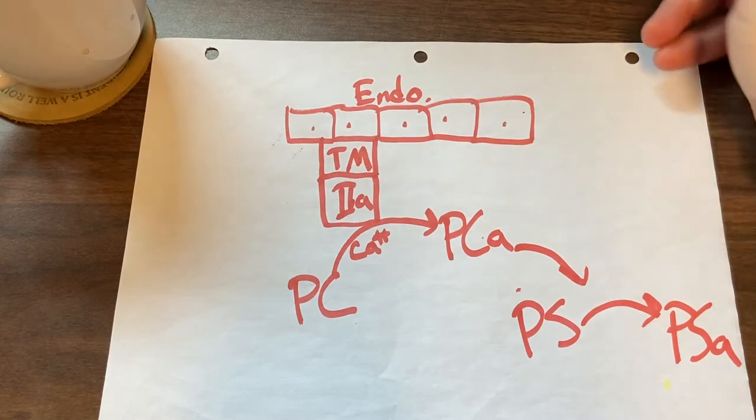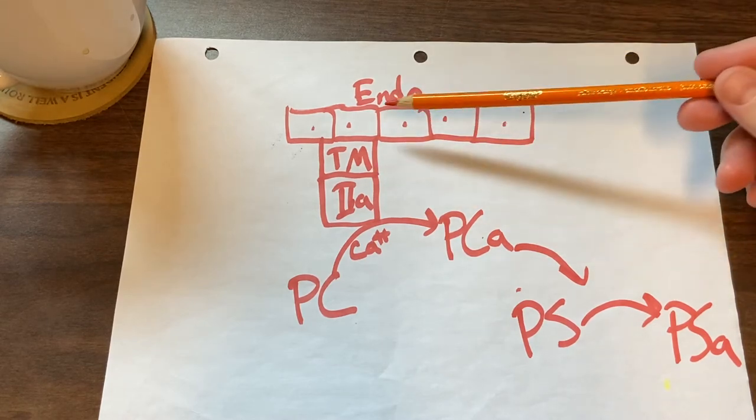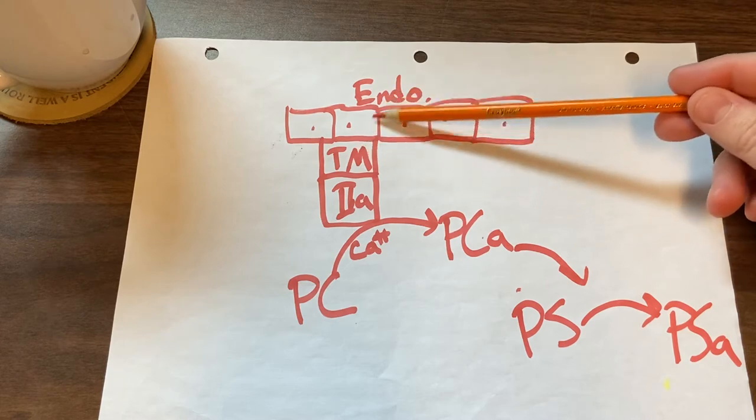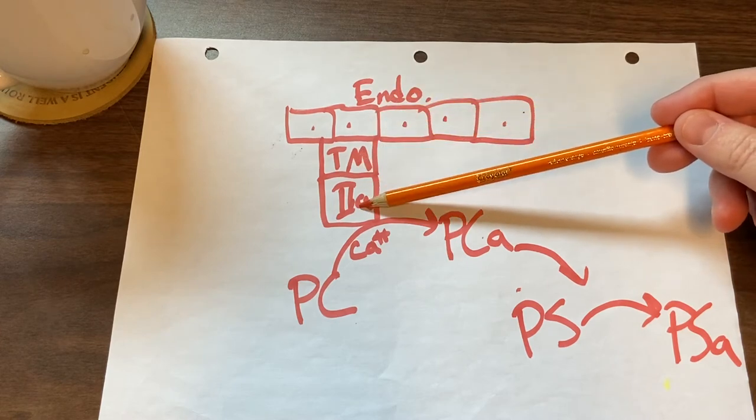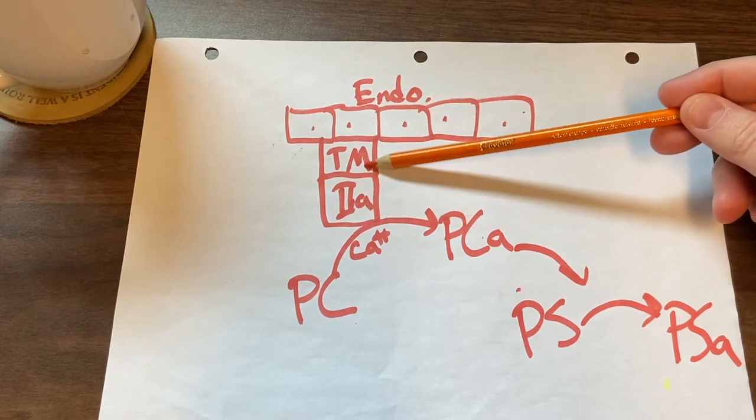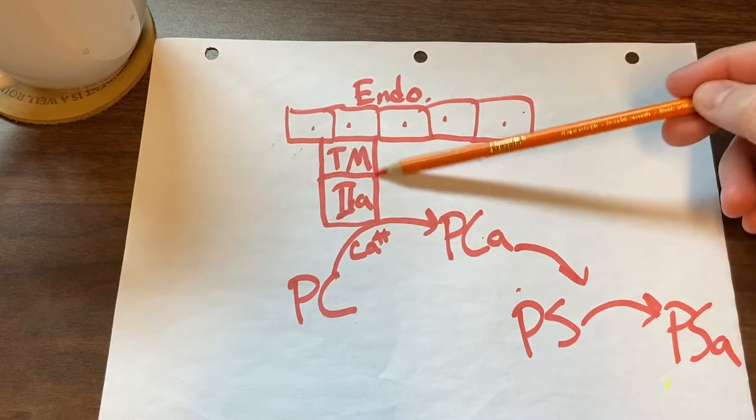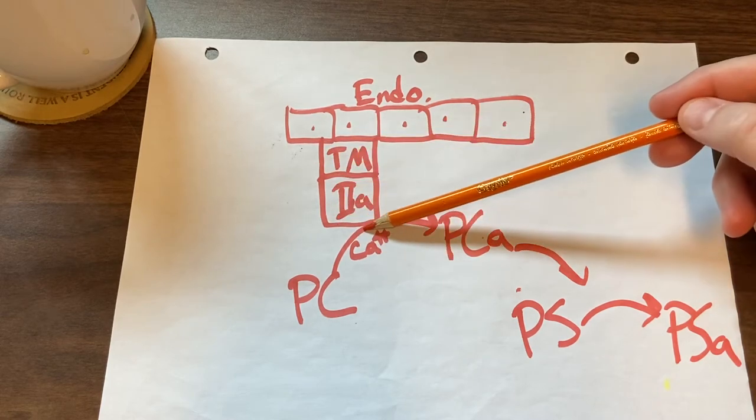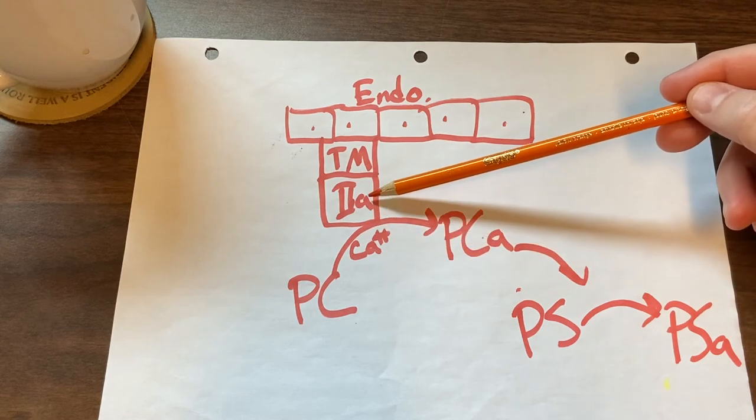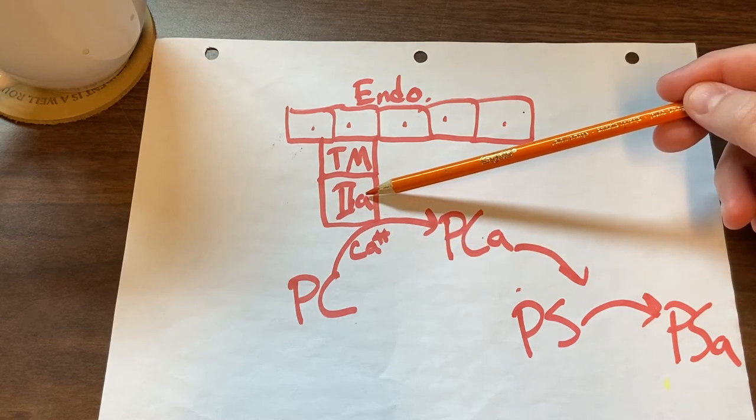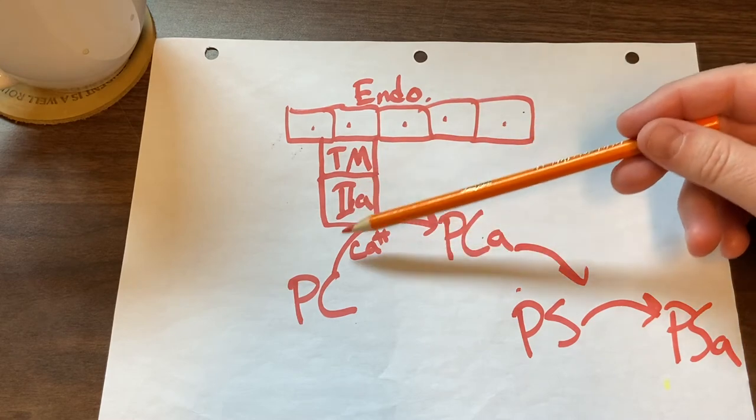That tissue modulin is already on the endothelium, so as soon as thrombin gets activated it will bind to some of that thrombomodulin. That combination or complex of thrombomodulin and thrombin will activate the next step or activate this regulatory piece.